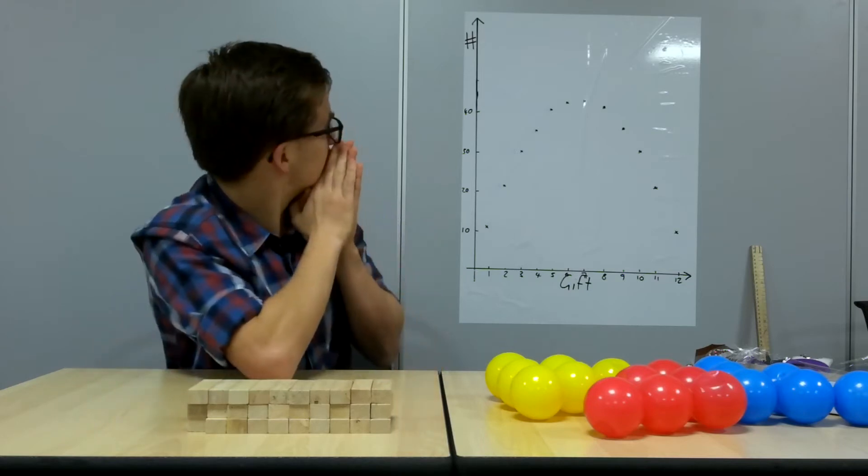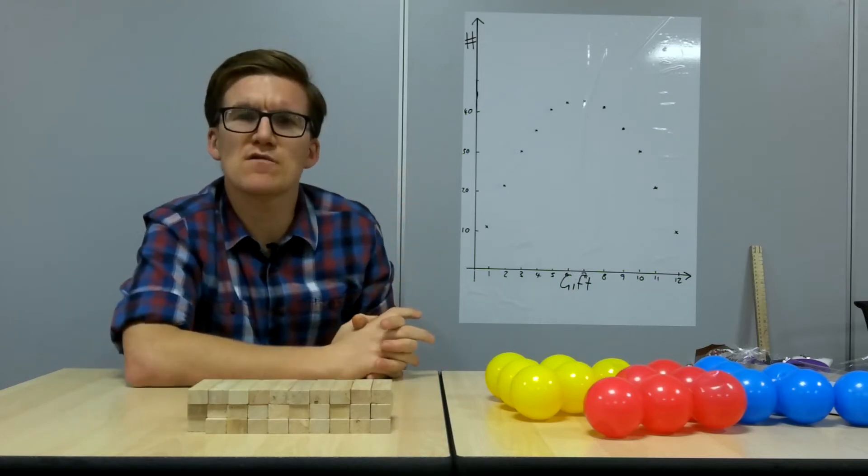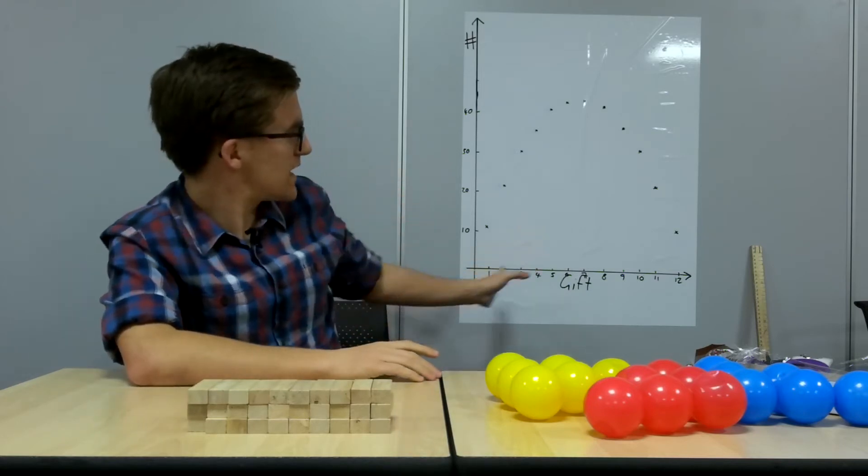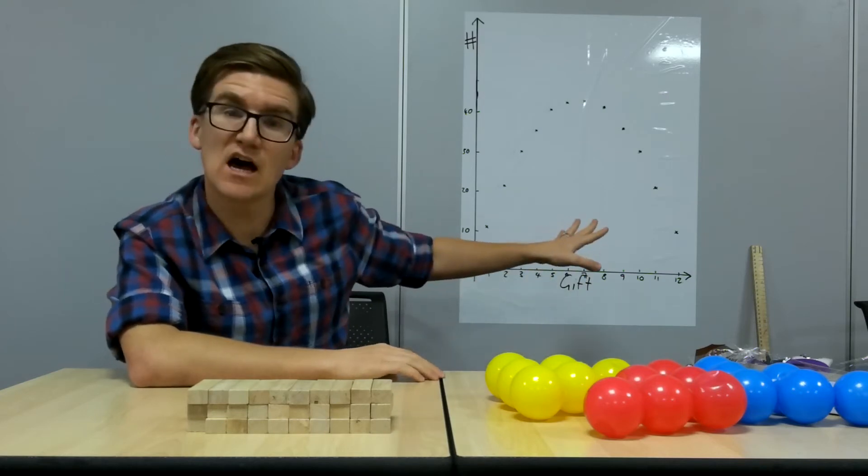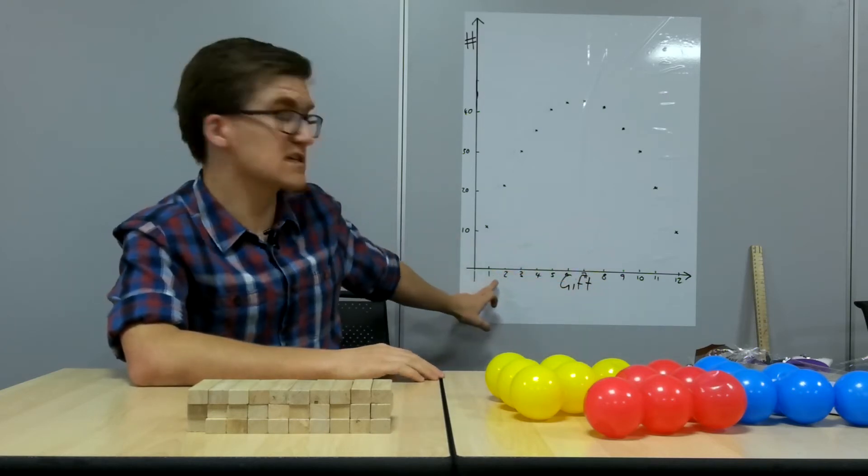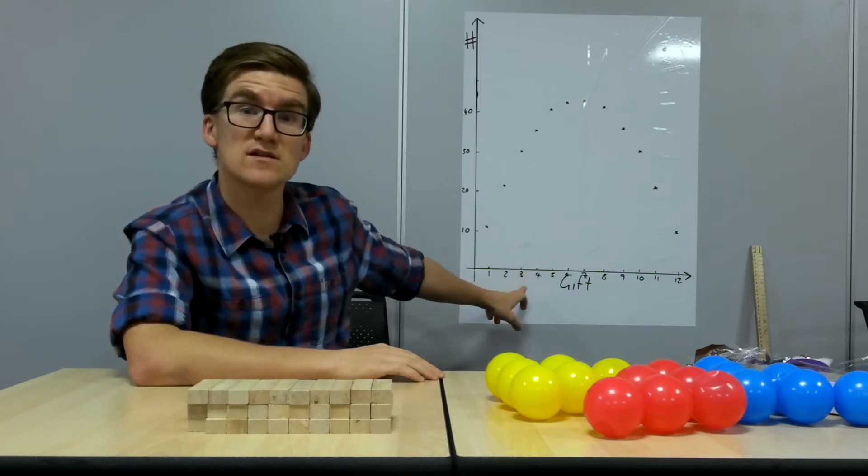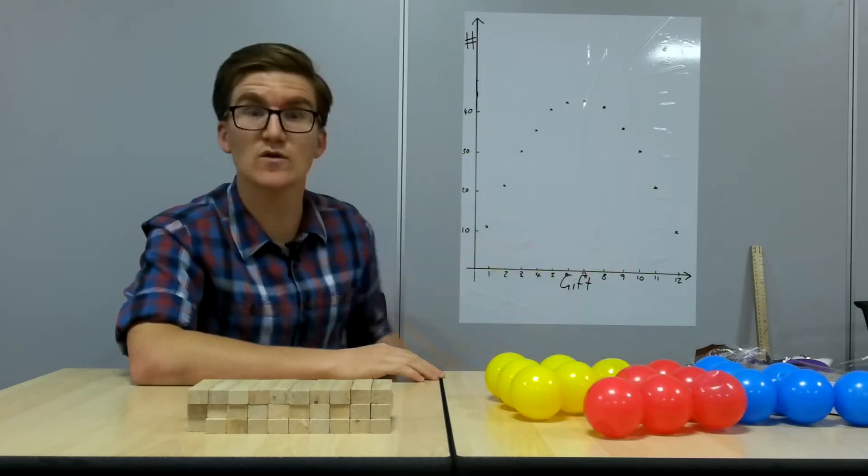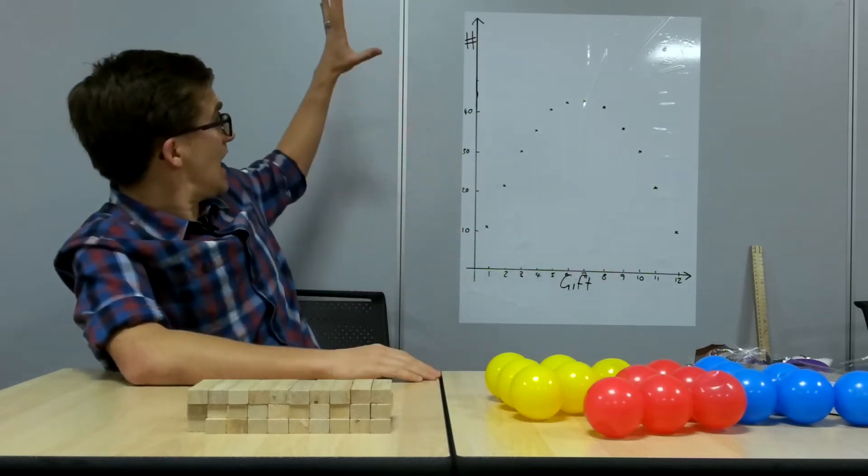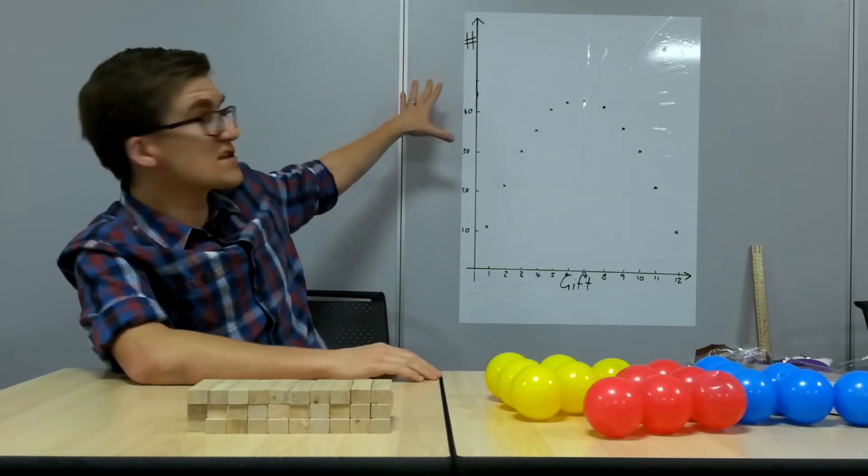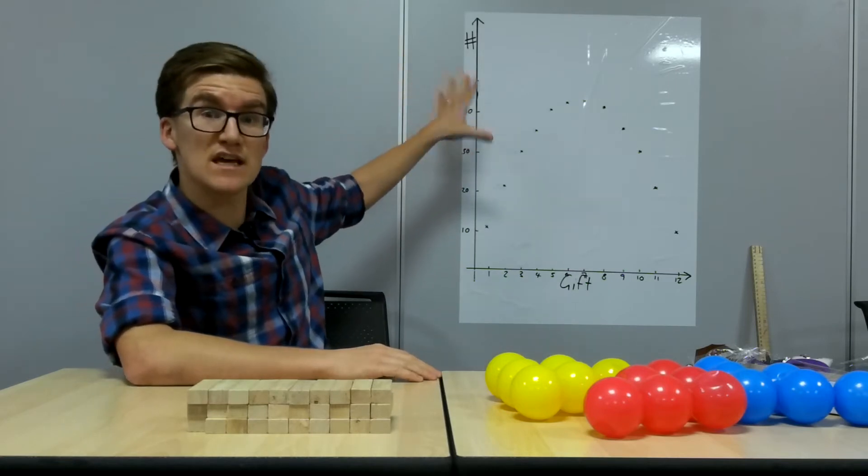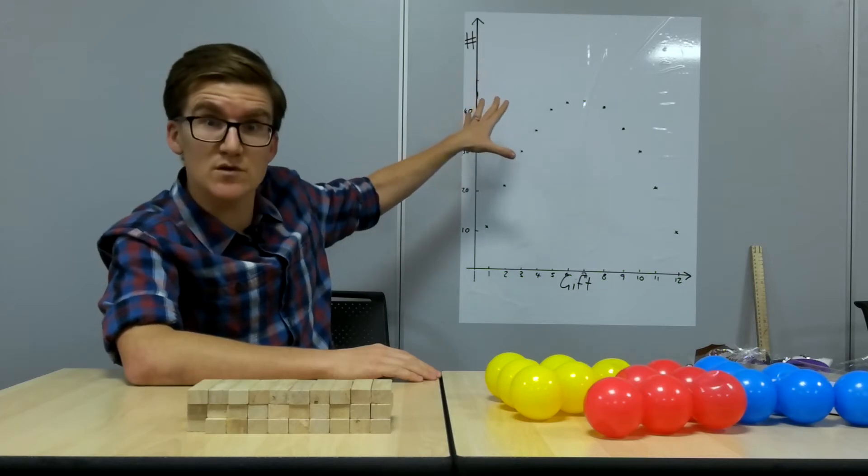Well, you might have noticed over my shoulder here, I made a graph of this earlier. So along the x-axis here we've got the gift, the gift that you're on. So this is partridge in pear trees, turtle doves, French hens, etc. going along the x-axis. And the vertical axis here is how many of those gifts you get in total by the end of the song.